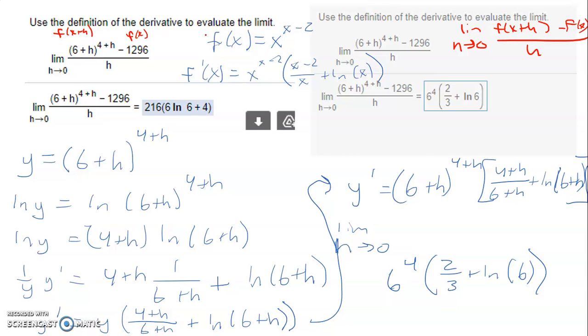So there's two ways to think about this problem. You can think about it as the function f of x equals x to the power of x minus 2. And we're looking when x is 6 because you've got 6 plus h. And if I did 6 plus h minus 2, that would give me 4 plus h. And then you can use the technique of logs because the definition of the derivative is basically just saying find the derivative and plug in that x value.